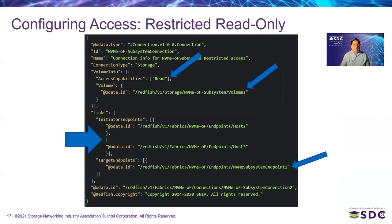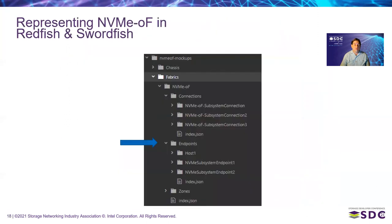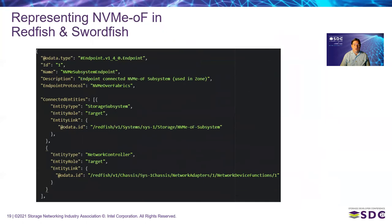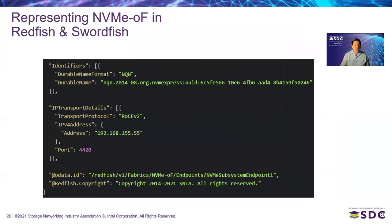Now let's look at how you would configure accessing an NVMe over Fabrics subsystem over a fabric. Here with the endpoints, you can see a file where an endpoint is connected to an NVMe over Fabrics subsystem — showing the connected entities, the network controller for this particular fabric configuration. Here is the unique identifier for the subsystem you want to access over fabric, and you can access it over RoCEv2 with a specific address and port. You might have several of these showing the NVMe over Fabrics subsystem is accessible over several fabric paths.